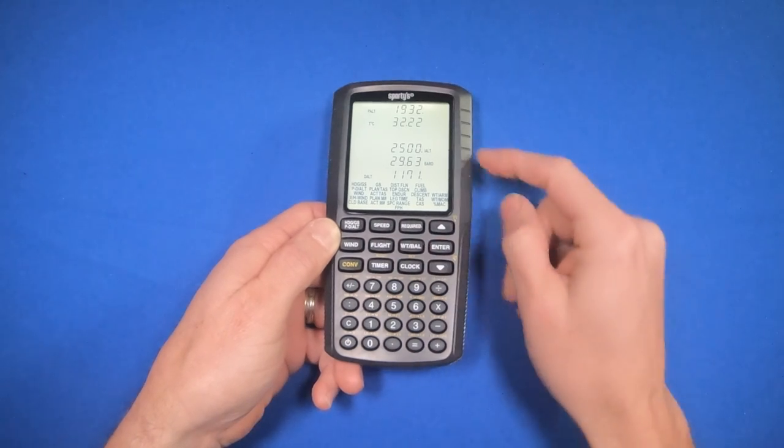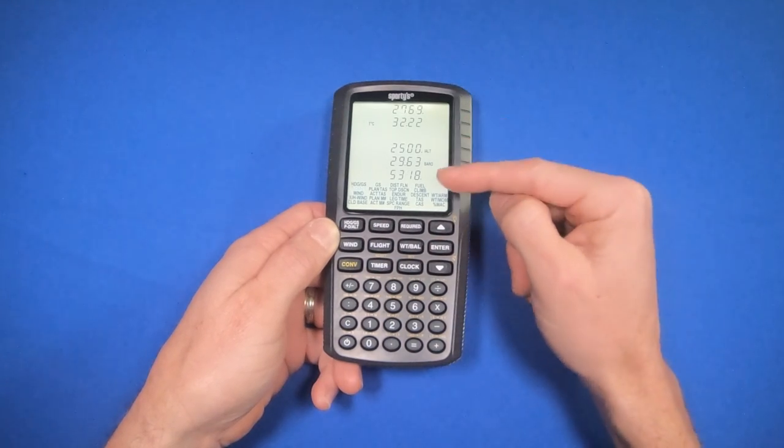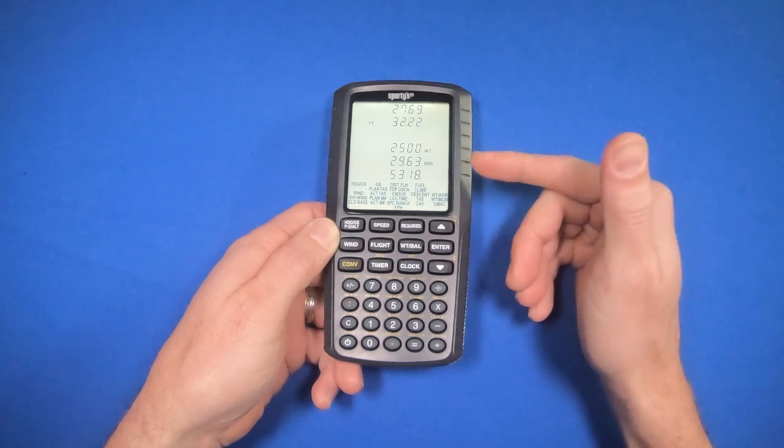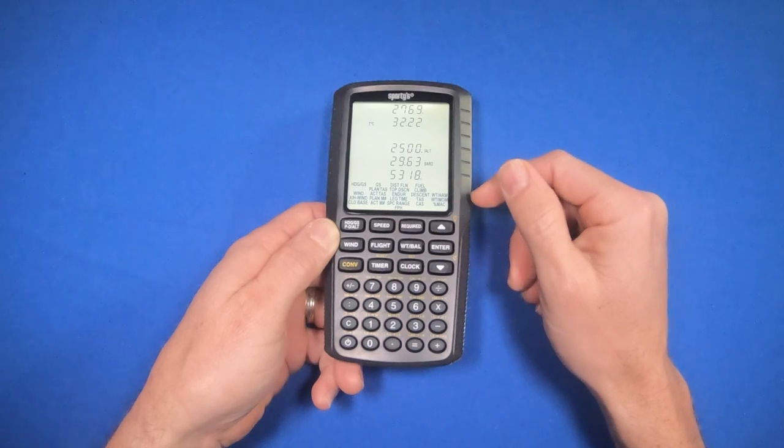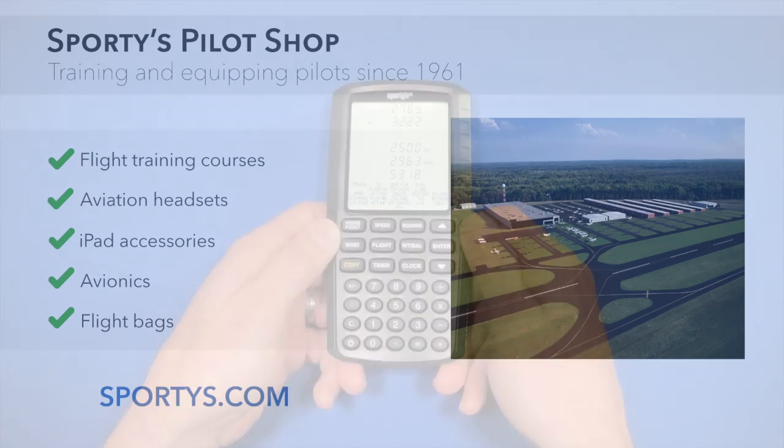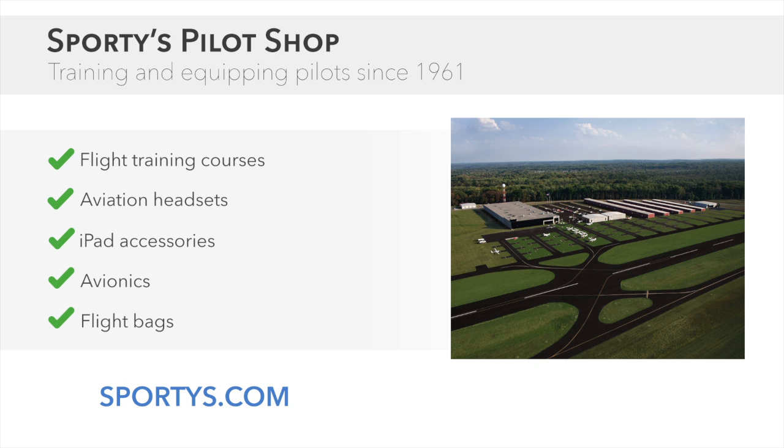I'll hit enter and it'll do the calculation. Density altitude is over 5,000 feet. This makes sense - hot day, low pressure. The airplane's going to perform poorly.